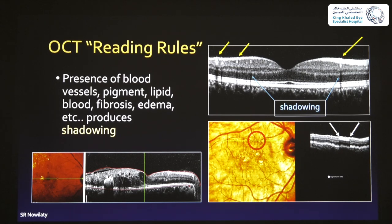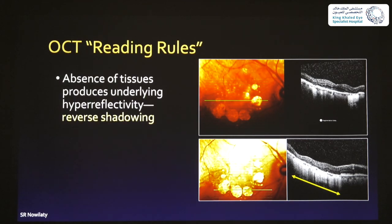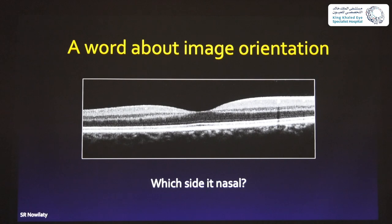Retinal vessels are hyper-reflective and cast shadows that go all the way through — you can see this clearly. A vessel oriented horizontally across the scan gives a horizontal hyper-reflective area with shadowing behind it. Lipid deposits in the outer plexiform layer also shadow posteriorly. Conversely, if there is absence of tissue — such as laser scars or geographic atrophy — this produces underlying hyper-reflectivity, which we call inverse shadowing or transmission enhancement.